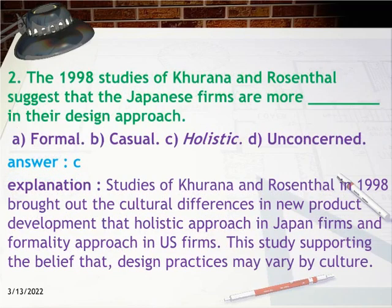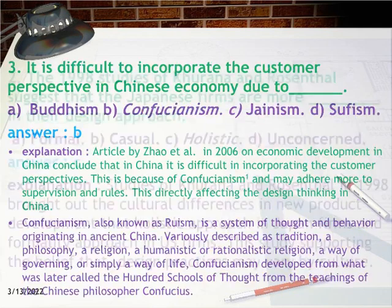Question 2: The 1998 studies of Karana and Rosenthal suggest that Japanese firms are more in which design approach? Answer: C, holistic. Explanation: Studies of Karana and Rosenthal in 1998 brought out cultural differences in new product development — a holistic approach in Japanese firms and a formality approach in US firms — supporting the belief that design practices may vary by culture.